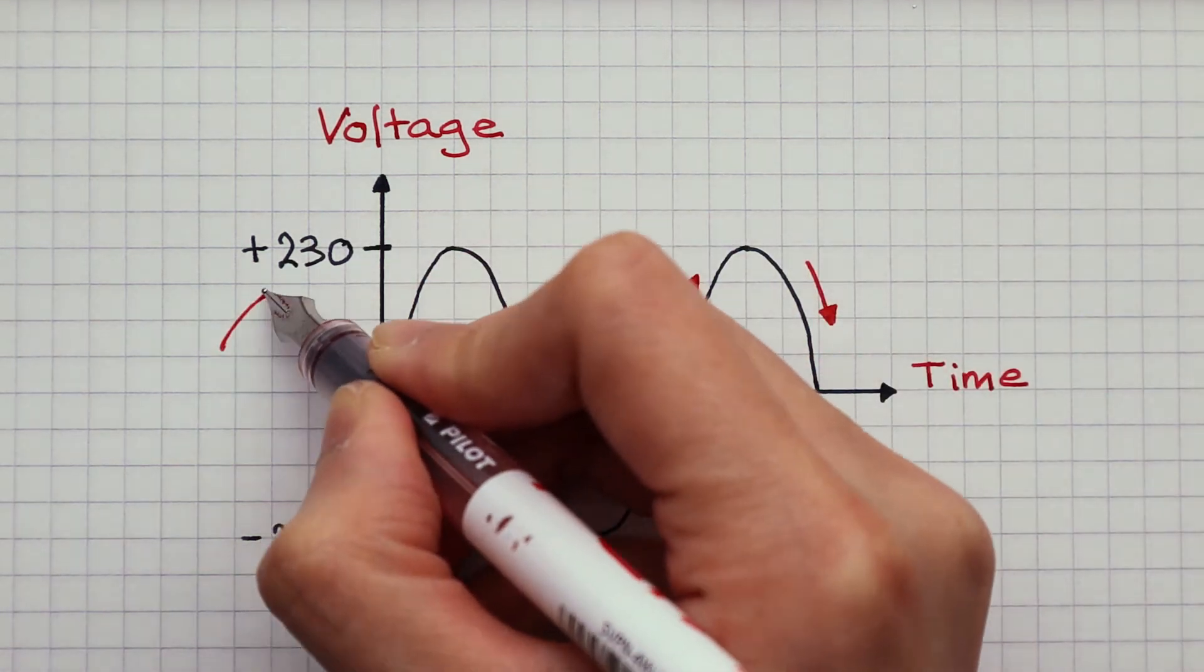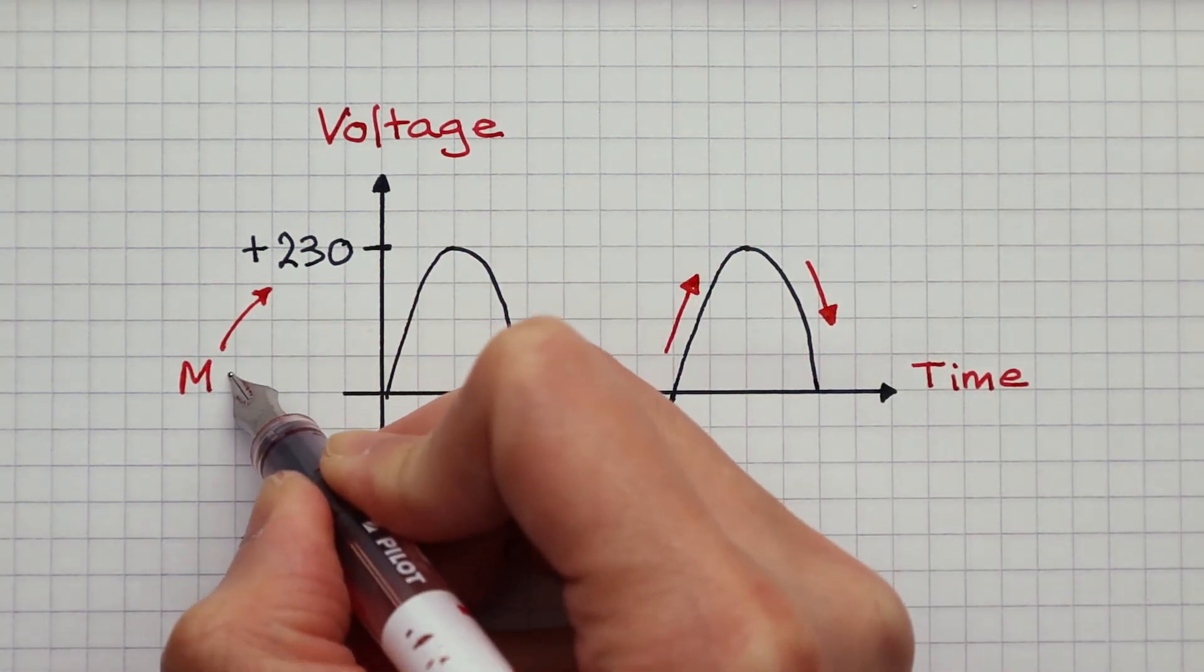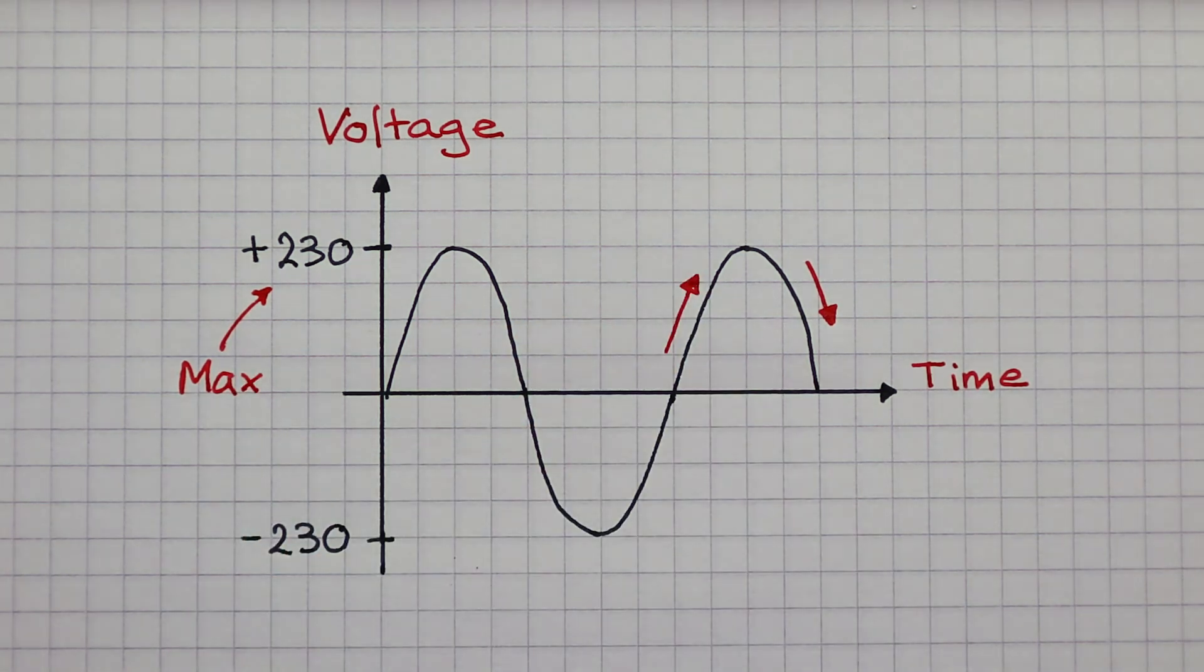The peaks show the maximum voltage, which is 230 volts. So you can see that in an alternating current, the voltage size changes constantly.